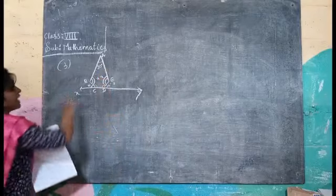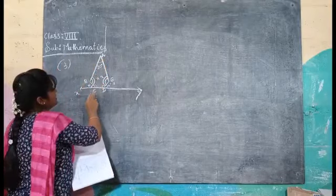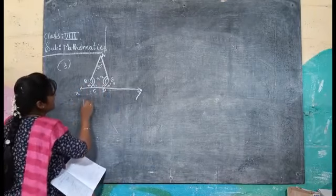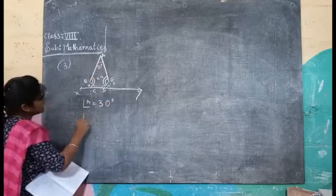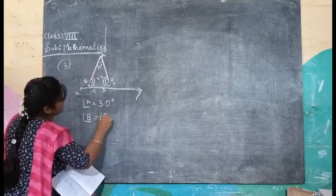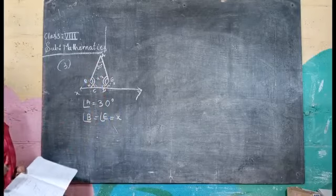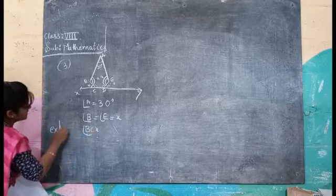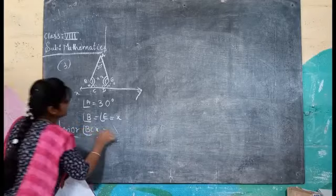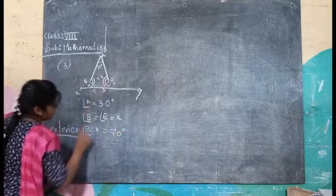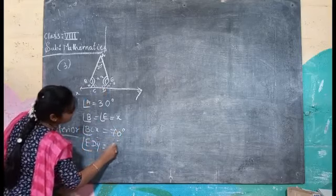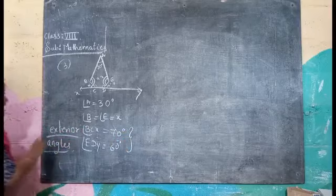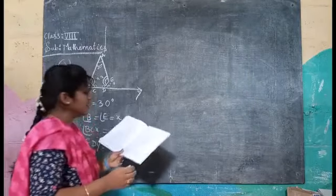First, I will give naming to all the sides: A, B, C, D, E, X and Y. Now I am writing the angles. Angle A equals 30 degrees. Angle BCX and angle EDY are the exterior angles. Angle BCX is 70 degrees — these are exterior angles. Angle EDY is 60 degrees — these are also exterior angles. Now we will find out the interior angles.